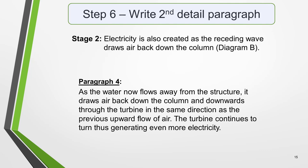For the fourth and final paragraph, you do the same thing for your remaining key features. For this question, it will be the second stage of the process. Here it is again. Stage 2: Electricity is also created as the receding wave draws air back down the column. And here's an example of what you could write. As the water now flows away from the structure, it draws air back down the column and downwards through the turbine in the same direction as the previous upward flow of air. The turbine continues to turn, thus generating even more electricity.